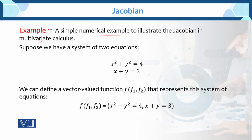Suppose we have a system of two equations. Equation number one: x squared plus y squared equals four. And equation number two: x plus y equals three. Here we can define a vector-valued function f with components f1 and f2 that represent the system of equations. F1 mein aapke paas first equation, f2 humaare paas hai second equation.